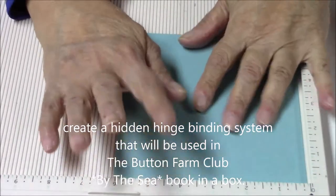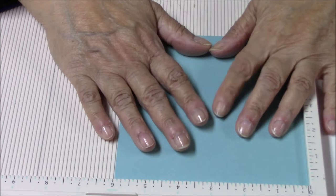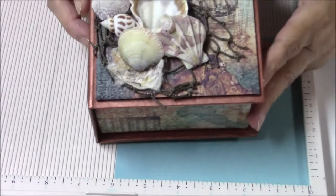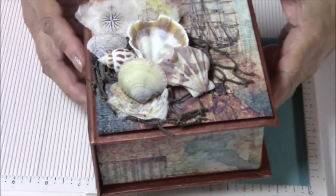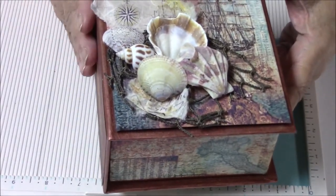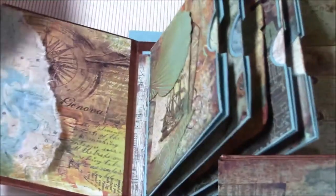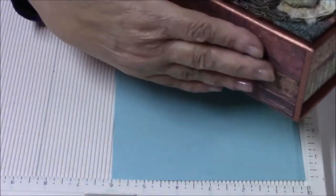Hi everyone, Nancy Wethington with you here. I'm going to show you how to do the binding that I used for my next Button Farm Club book. This is actually a book in a box. It uses Graphic 45 box plus papers from Stamperia and Chow Bella. And I've used the side of the box as the binding.